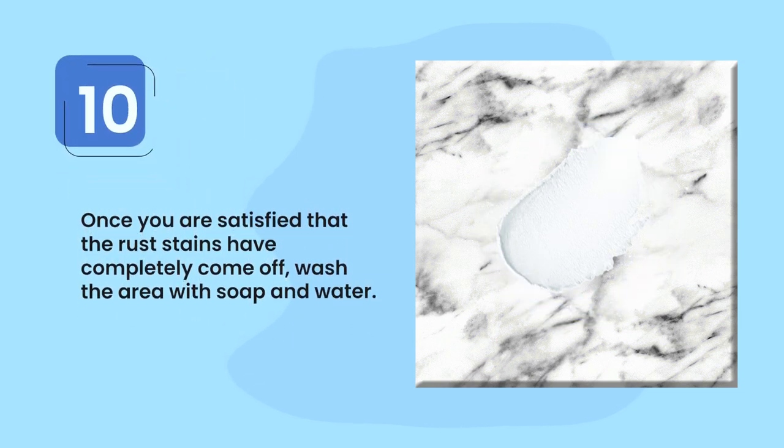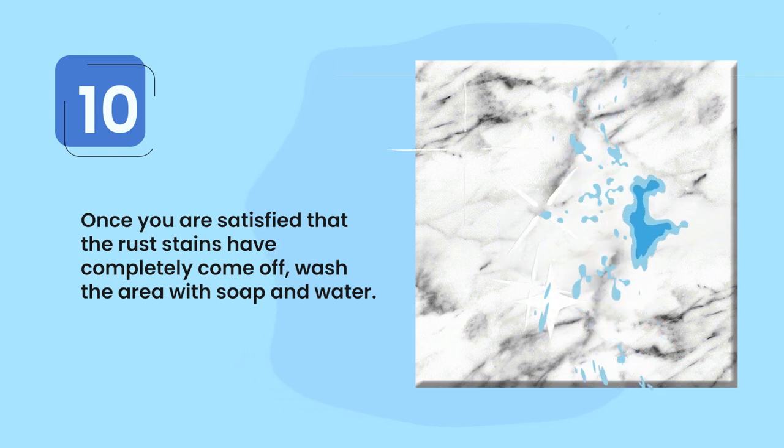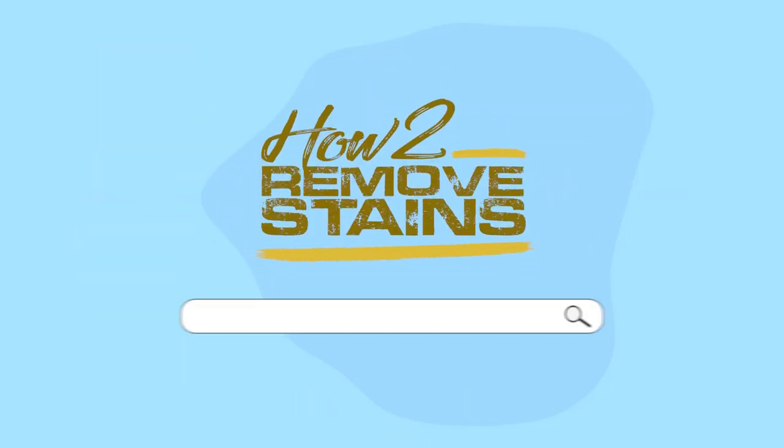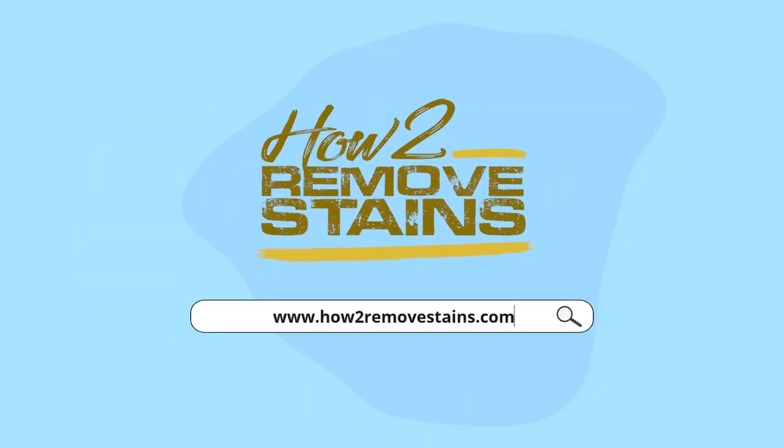Step ten: once you are satisfied that the rust stains have completely come off, wash the area with soap and water. For more stains you need to deal with, visit how to remove stains dot com.